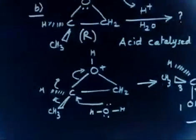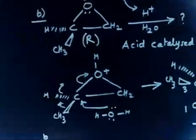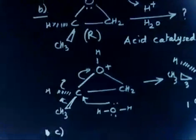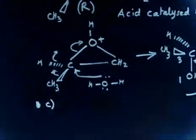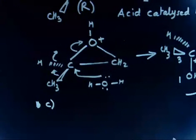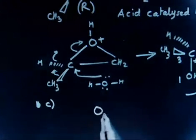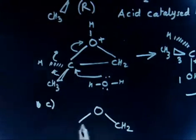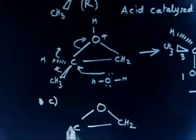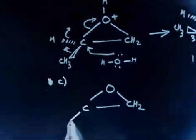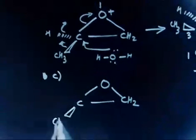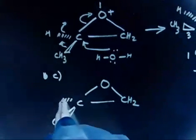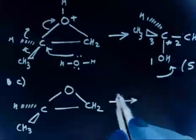Now part C says: give the mechanism of base-catalyzed hydrolysis of R-propylene oxide. So again we are taking the R-isomer of propylene oxide: OCH₂, carbon, CH₃ at the front, and hydrogen at the back.